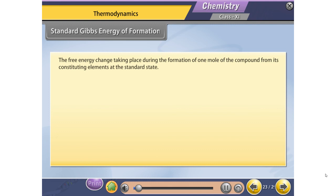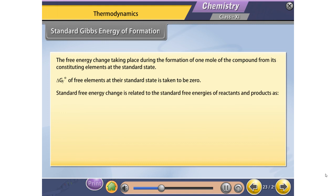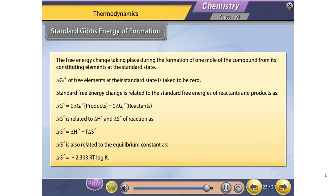The standard Gibbs energy of formation is the free energy change during the formation of one mole of a compound from its constituting elements at the standard state. ΔG°_f of free elements at their standard state is taken as zero. The standard free energy change is related to standard free energies of reactants and products as ΔG° = ΣΔG°_f(products) − ΣΔG°_f(reactants). ΔG° is related to ΔH° and ΔS° as ΔG° = ΔH° − TΔS°. ΔG° is also related to the equilibrium constant as ΔG° = −2.303 RT log K.